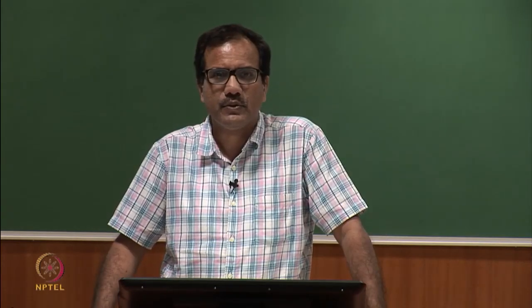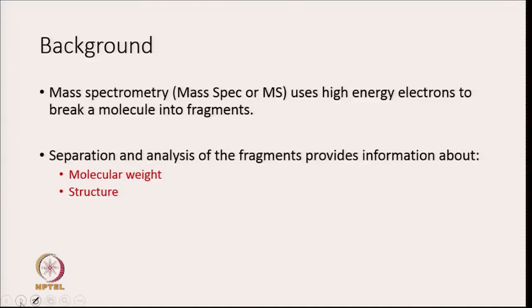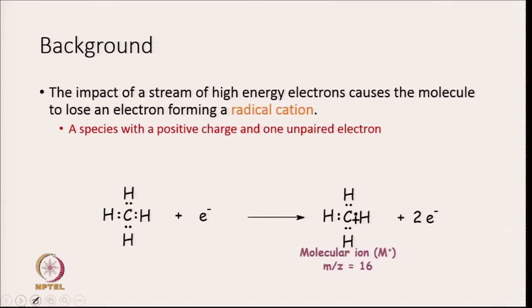Mass spectrometry uses high energy electrons to break a molecule into fragments. When you analyze the fragments, it can provide information about molecular weight and structure. The impact of a stream of high energy electrons causes the molecule to lose an electron, forming a radical cation. When high energy electrons are bombarded on a molecule, the molecule loses an electron and forms a radical cation.